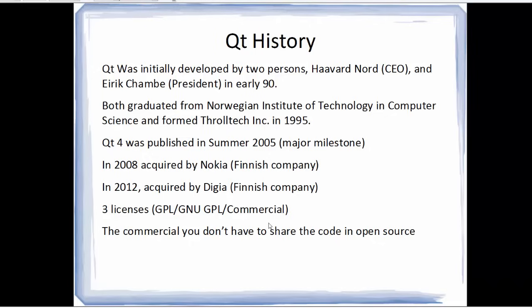Qt has three licenses: one is GPL, second is GNU GPL, and third is commercial. Qt is an open source framework if you want to develop an open source application whose source is free and open online. But it also has a commercial version — if you want to make a private application, you can use the commercial version and you don't have to share your code as open source.